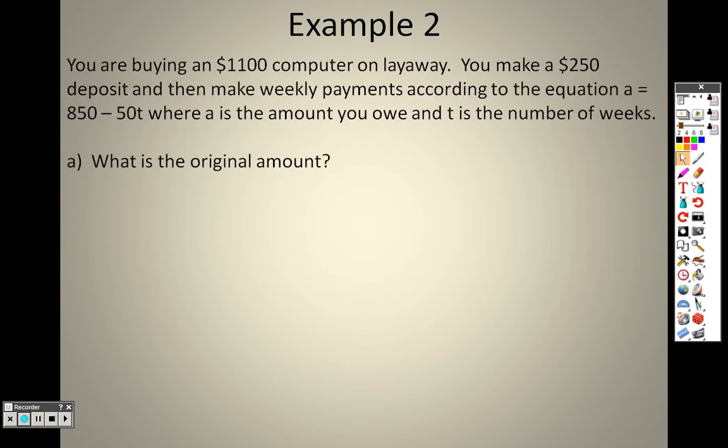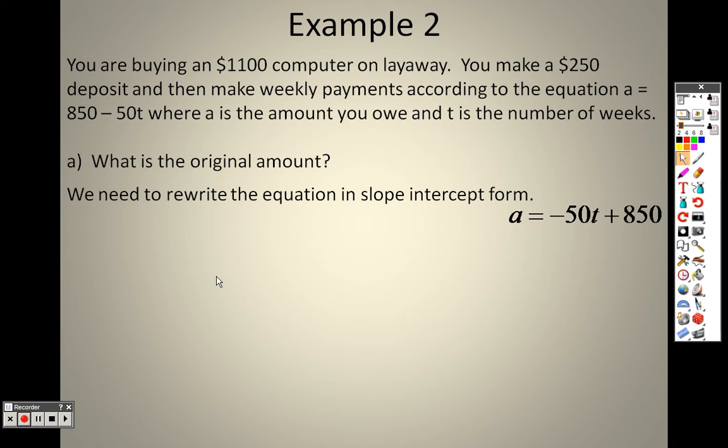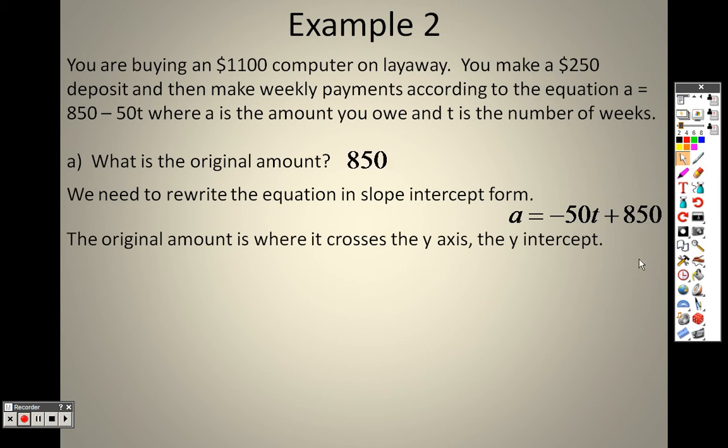So you are buying a $1,100 computer on layaway. You make a $250 deposit and then make weekly payments according to the equation A equals 850 minus 50T, where A is the amount you owe and T is the amount of weeks. So what's the original amount? Well, the original amount is what you started with, or like the y-intercept. The number with the variable is never the y-intercept. It's the number all by itself. That's the y-intercept, and that number all by itself was 850. So we need to rewrite this equation into that form, and here it is, negative 50T plus 850. So the original amount is where it crosses the y-axis at, which is the y-intercept, or 850. That's how much that he was able to put down on it.